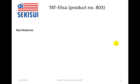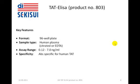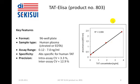What are the key features of product number 803? It is a 96-well plate microtiter format ELISA. The sample type used for the assay is human plasma, be it citrated or EDTA plasma. The assay range is from 0.12 to 7.0 nanograms per milliliter, and antibodies specific for human TAT are being used. The intra-assay variation coefficient is 3.3% and intra-assay CV 12.9%. This shows a typical standard curve of TAT concentration versus absorbance at 450 nanometers.